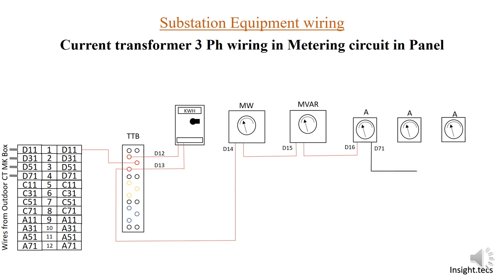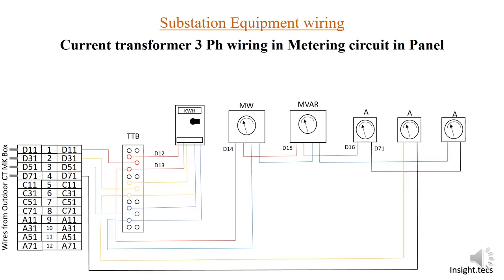Then there is d71 coming out, which is the common connection as we saw in the previous video. In a similar way, connections are done for the other two phases, Y and B.